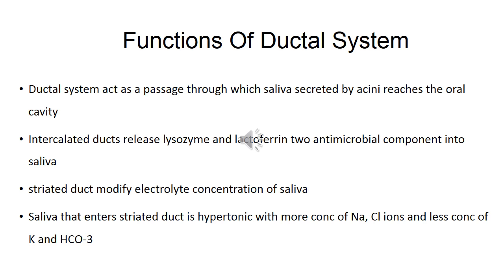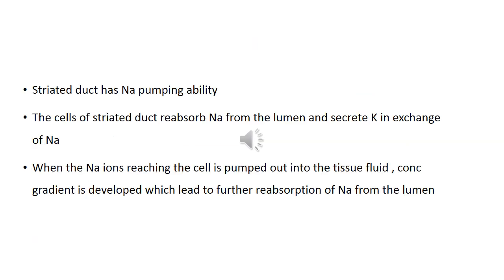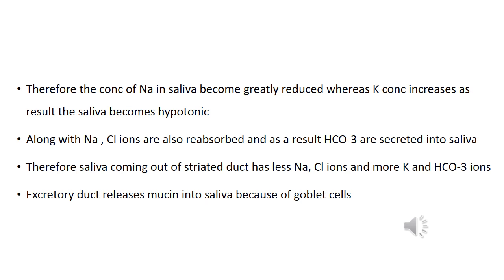The striated duct modifies the electrolyte concentration of saliva. Saliva that enters the striated duct is hypertonic, with more concentration of sodium and chloride ions and less concentration of potassium and HCO3. The striated duct has sodium pumping ability — its cells reabsorb sodium from the lumen and secrete potassium in exchange. The sodium ions reaching the cell are pumped out into the tissue fluid, developing a concentration gradient which leads to further reabsorption of sodium from the lumen. Therefore, the concentration of sodium in the saliva becomes greatly reduced while potassium concentration increases, and as a result the saliva becomes hypotonic.